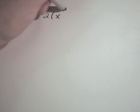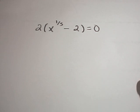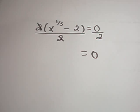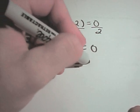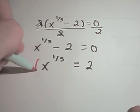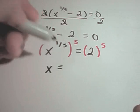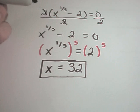Let's do maybe 2 more. Suppose we have 2 times x to the 1/5th minus 2 equals 0. I'm going to start by dividing both sides by 2 — those cancel on the left, and 0 over 2 is just 0 — giving me x to the 1/5th minus 2 equals 0. I'll add 2 to both sides, then raise both sides to the 5th power. On the left I get x to the 1st, and 2 to the 5th is 32 as our solution.